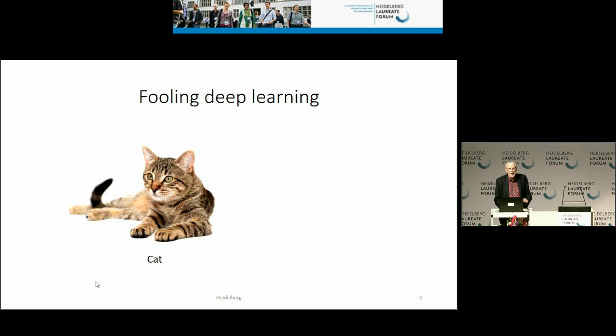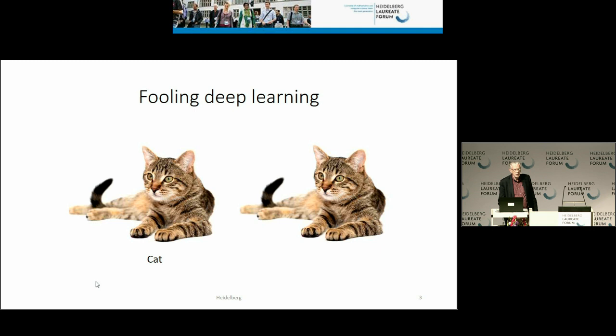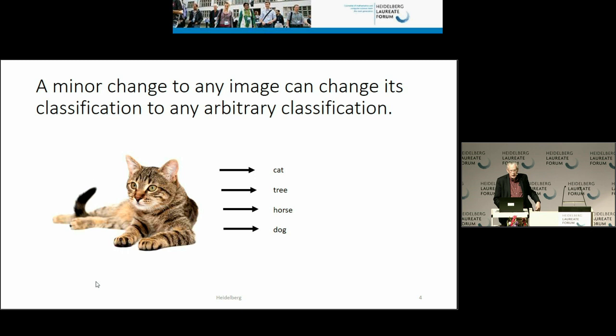You can take an image of a cat and change just a few pixels — and what you now have is an automobile. Basically, you can make any minor change to an image and change its classification to an arbitrary classification. The question is: why can you do that?